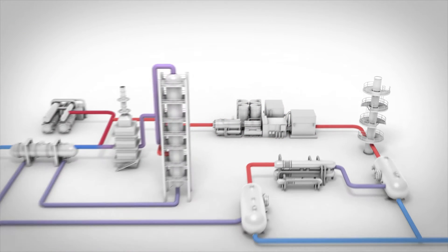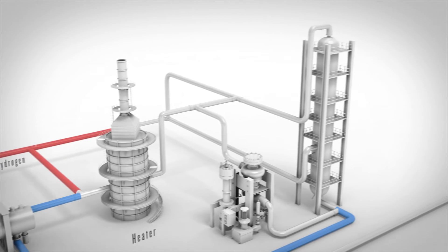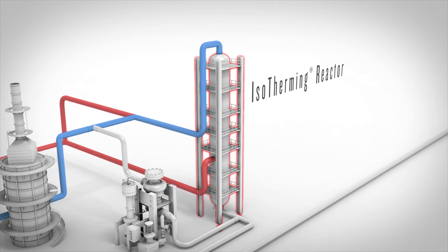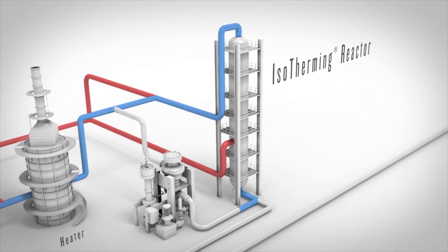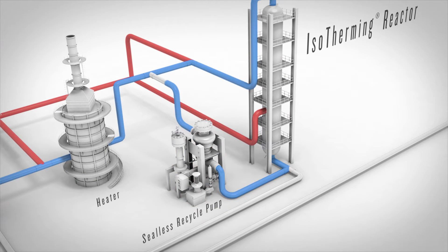But there's a better way. Let's say the feedstock mixes with a bit of makeup hydrogen and flows through a single-phase isotherming reactor. Then, as the liquid-only effluent exits the reactor, a pump recycles some of it to mix with the feedstock while the remaining effluent is further separated.